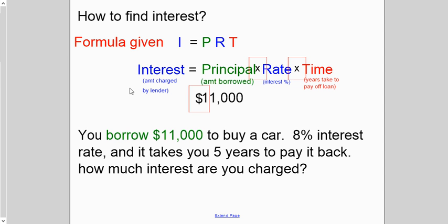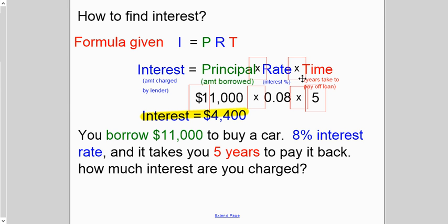So $11,000 is the principal. The rate is eight percent, so let's make that into a decimal, that would be 0.08, and the time is five years, so that's five. You multiply all three of these numbers together and it's $4,400.